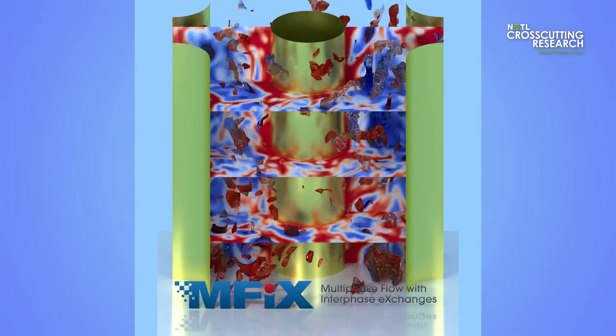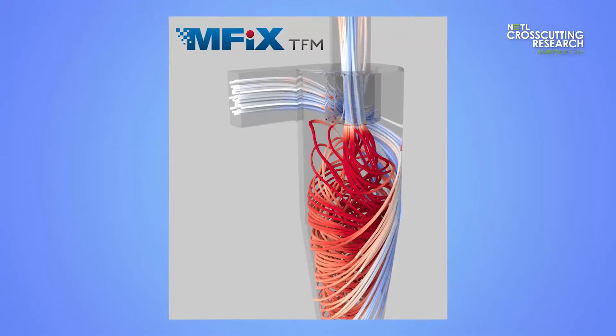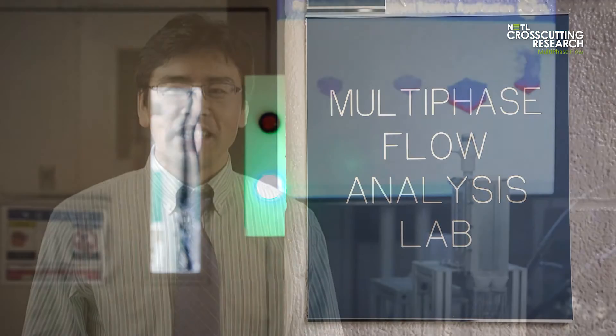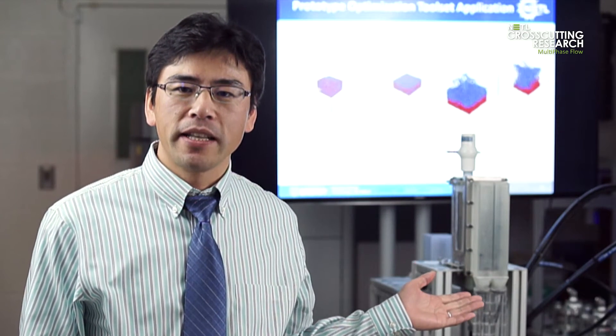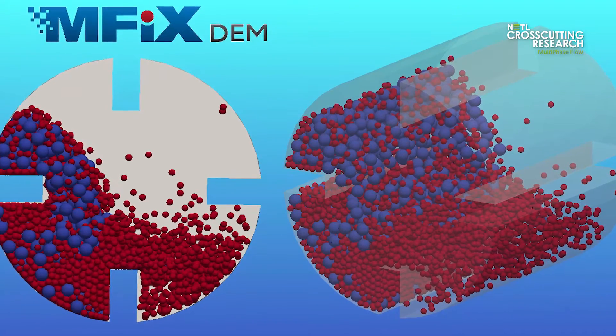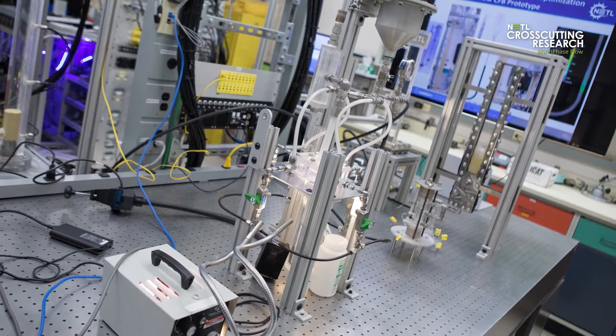An important step in developing these models involves using high-quality experimental data to validate the models. That is where NETL's multiphase flow analysis lab comes in. This lab is an important part of developing our models. Using these carefully controlled and highly instrumented facilities, NETL researchers can apply the computer model into a real-world experiment and see how well it predicts the measured performance.